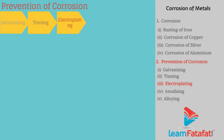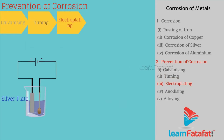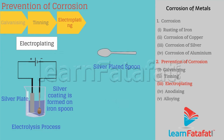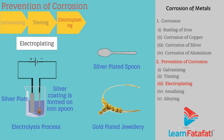Electroplating. Electroplating is a method in which a coating is formed on another metal by using electrolysis. For example, silver plated spoons, gold plated jewellery, etc.